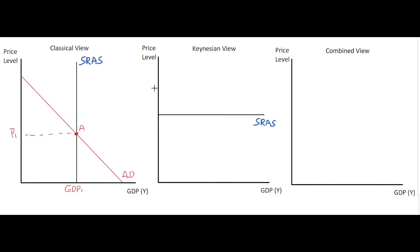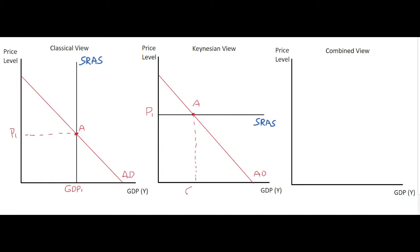Replicating that on the right-hand side, we have our aggregate demand curve downward-sloping, noted as aggregate demand. Again we note the equilibrium point: in the short run, at point A we have a price level P1 and an equilibrium GDP level GDP1.